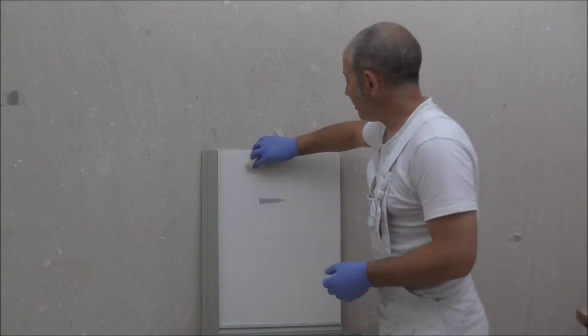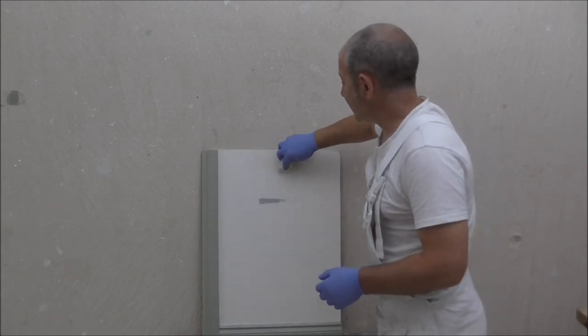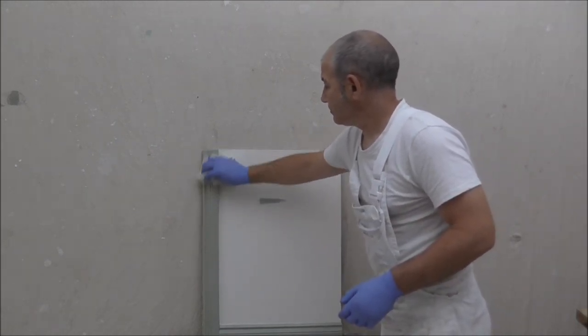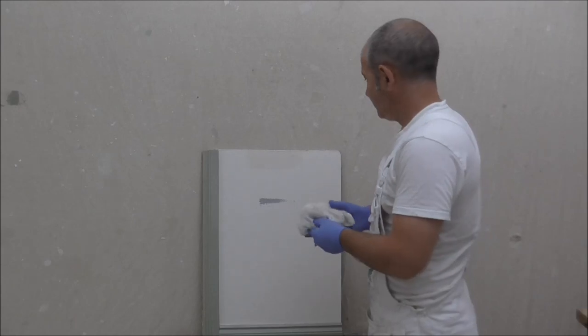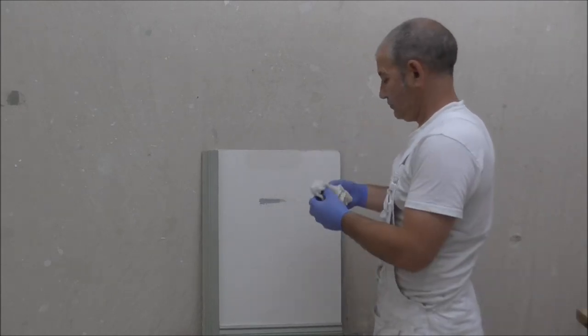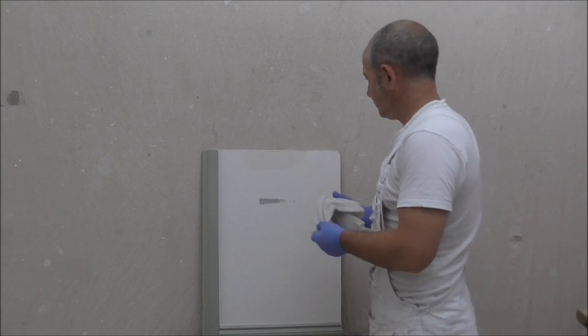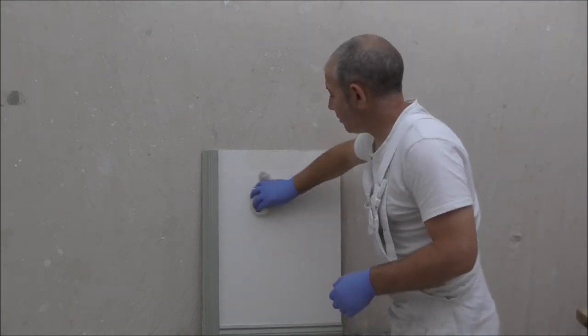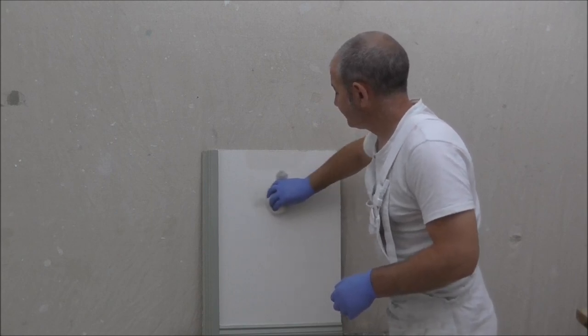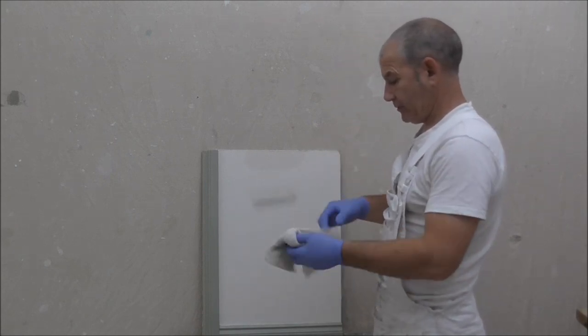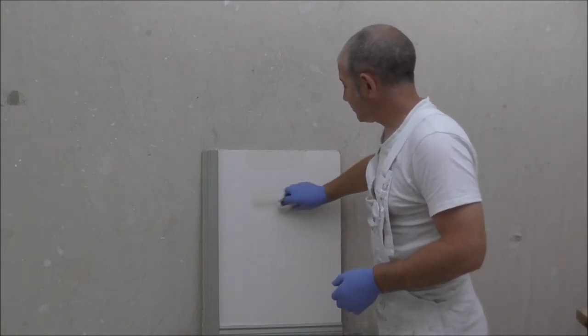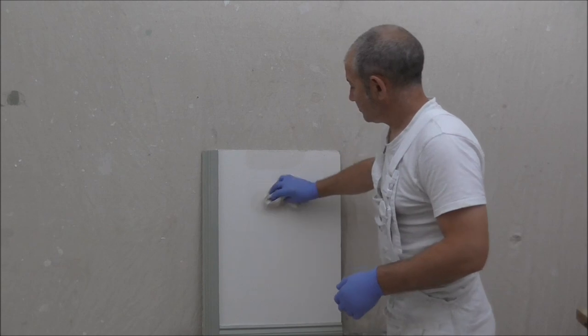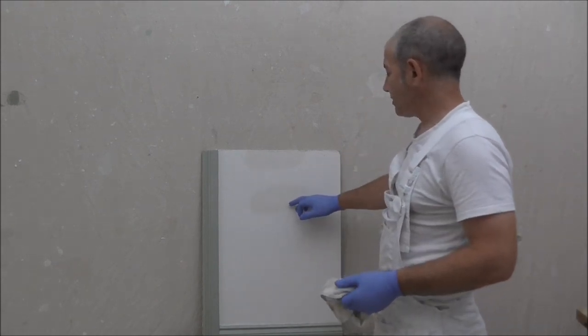So as you're wiping off, what will tend to happen is you'll be starting to wipe some of the emulsion paint. With the paint, it's a lot worse. You can't rub it out. You end up taking the emulsion paint off.